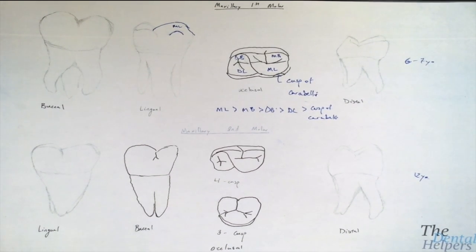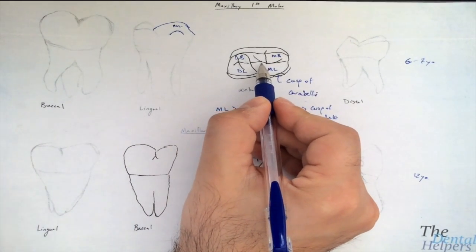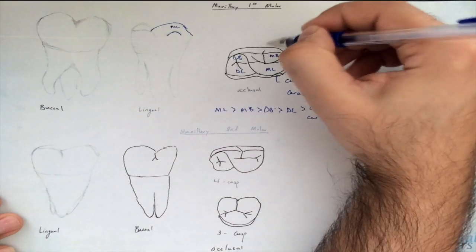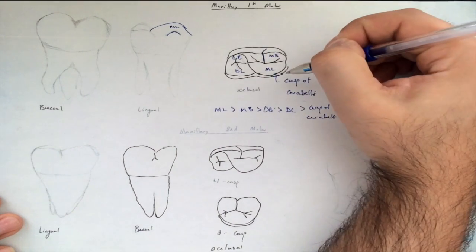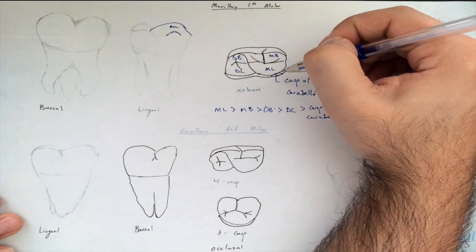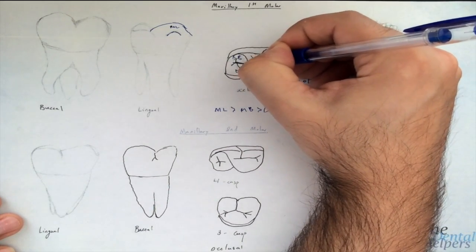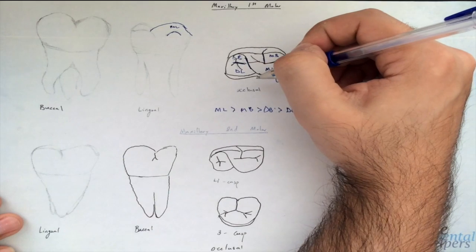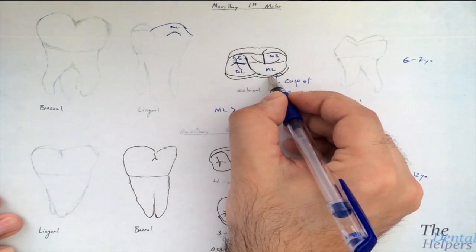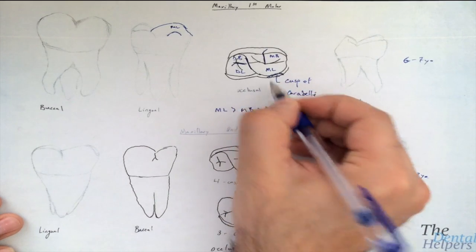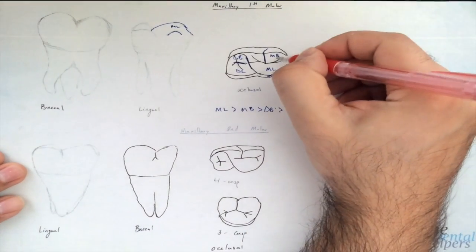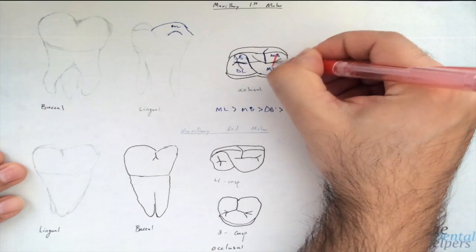Now let's look at the grooves. This tooth has the central groove, which goes down the center of the tooth. From there we have the buccal groove, going toward the facial surface. Next, we have the distal buccal groove, and the distal oblique groove. We also have a groove for the fifth cusp — the cusp of Carabelli.